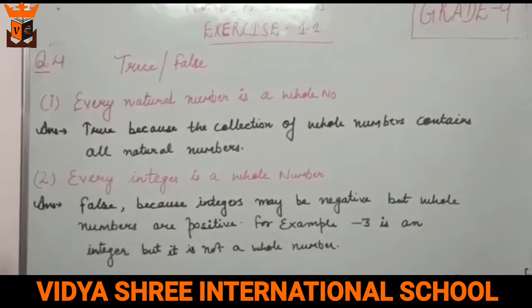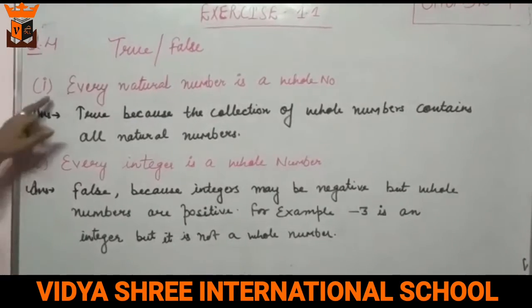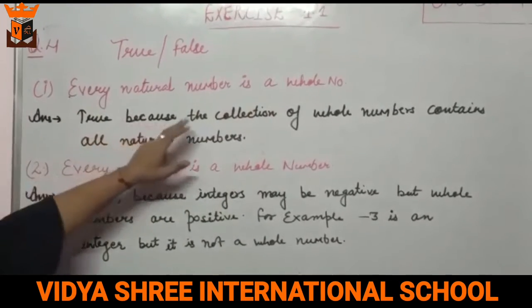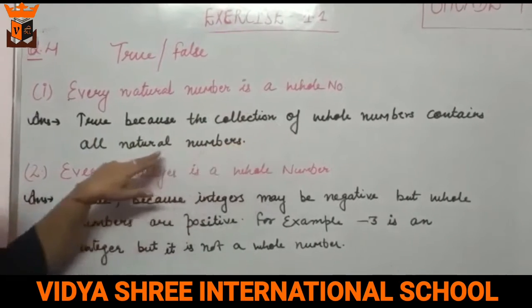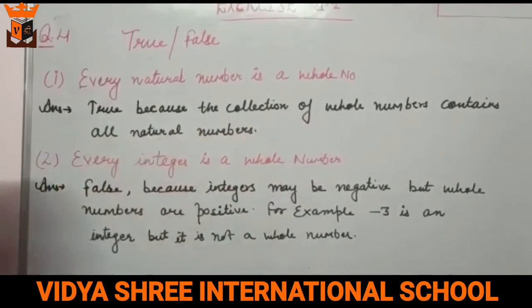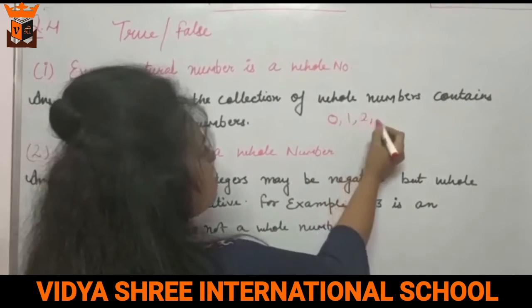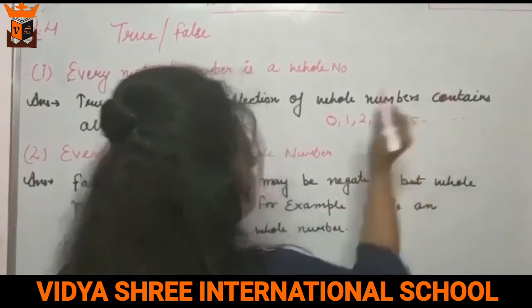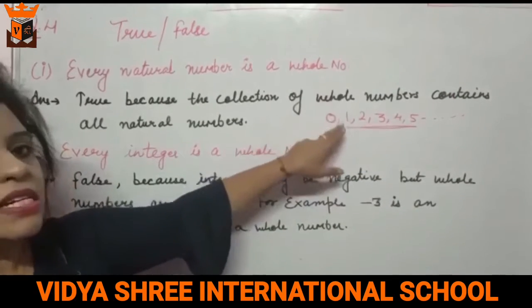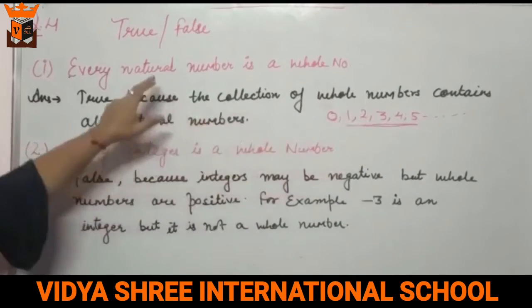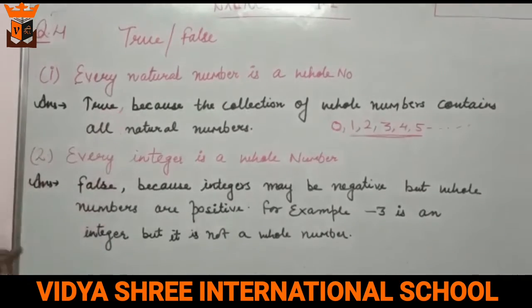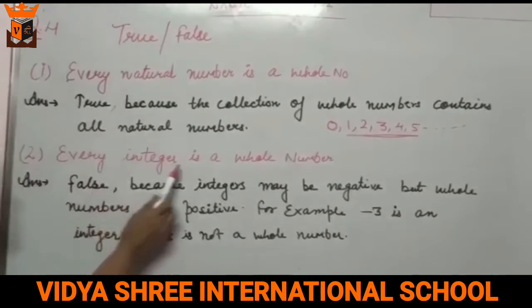Question number 4 — True or False: Every whole number is a natural number. So, what is true? It is true because the collection of whole numbers contains all natural numbers. Whole numbers are 0, 1, 2, 3, 4, 5 and so on, and these include all natural numbers.